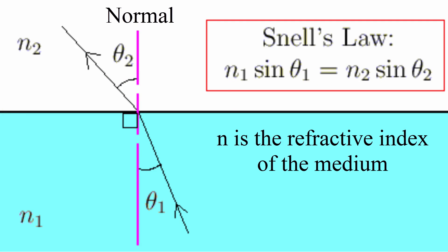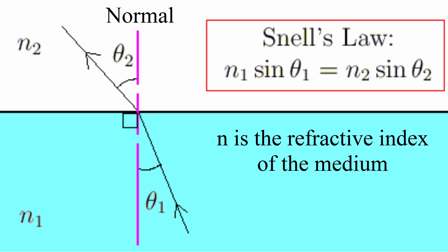Refraction is the bending of light as it passes through the boundary between two different media. This is caused by a change in the speed of light. A slowdown will cause a refraction towards the normal, whereas a speedup will cause a refraction away from the normal. This can be modeled using the equation on screen, also known as Snell's Law.